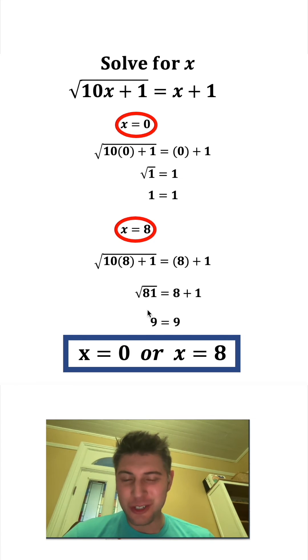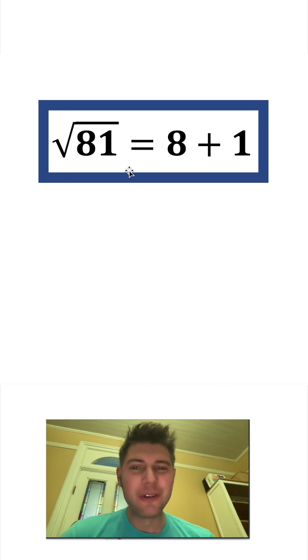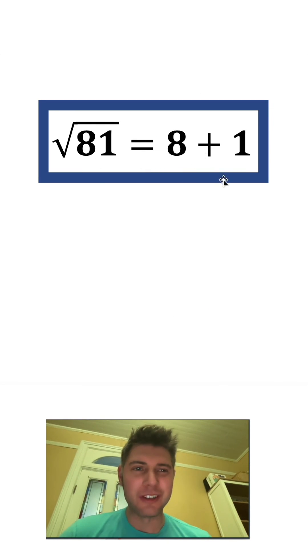But look at this piece right here. Square root of 81 equals 8 plus 1. Let's put a box around that. Let's zoom in on that. Square root of 81 equals 8 plus 1. This is great. This is probably the only time this happens. I love it.